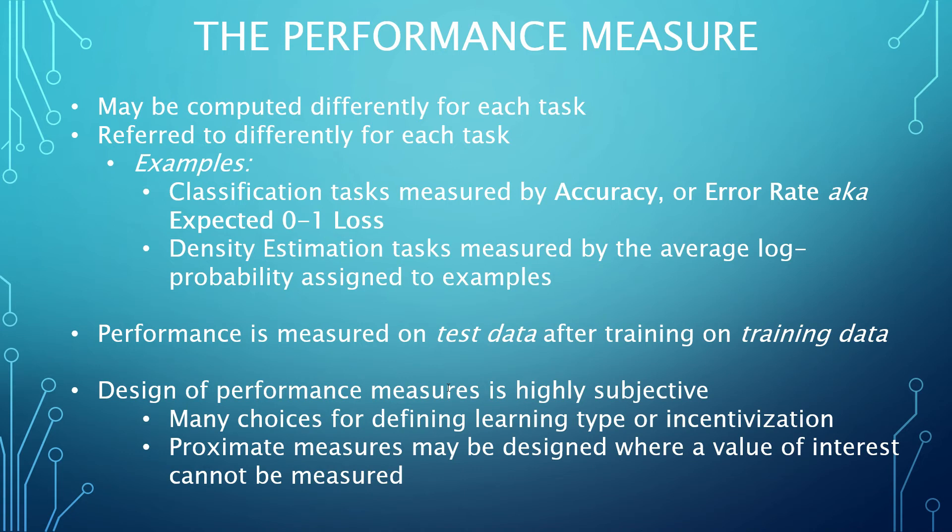So again, we're moving through the definition of machine learning, and now go from describing tasks that an algorithm should perform, to the measure of performance describing their effectiveness. For some tasks, such as classification, the performance measure is the accuracy of the program. It might be equivalently called the error rate, which might also be referred to as the expected 0-1 loss, because loss is 0 if an object is classified correctly, and 1 if classified incorrectly. Naturally the process is different if the success of the result is not binary.